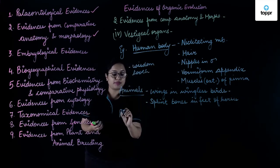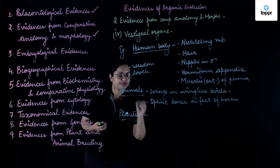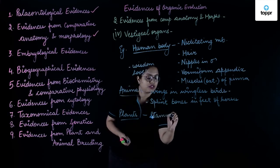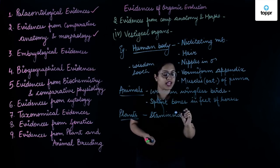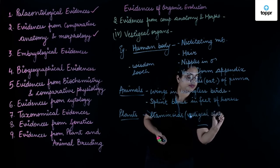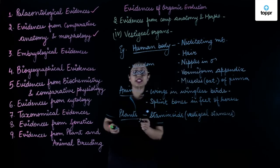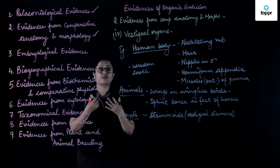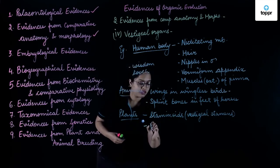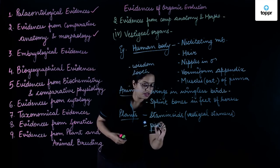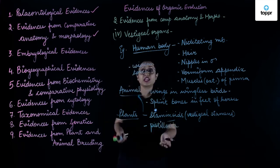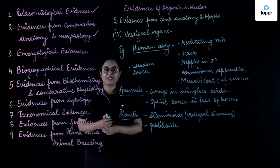Let's see some examples of vestigial organs in plants. In plants, staminoids are present — these are the vestigial stamens — and they are present in the flowers of the family Labietti, Cucurbitaceae, and Caesalpinoideae. Pistilloids are also present; pistilloids are vestigial pistil, and these are present in male flowers of the Cucurbitaceae family.